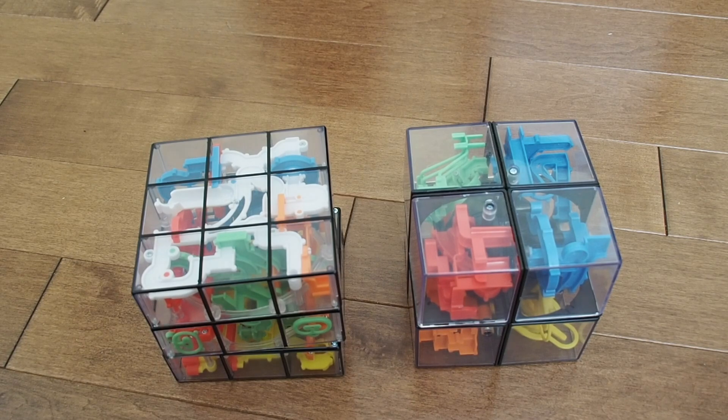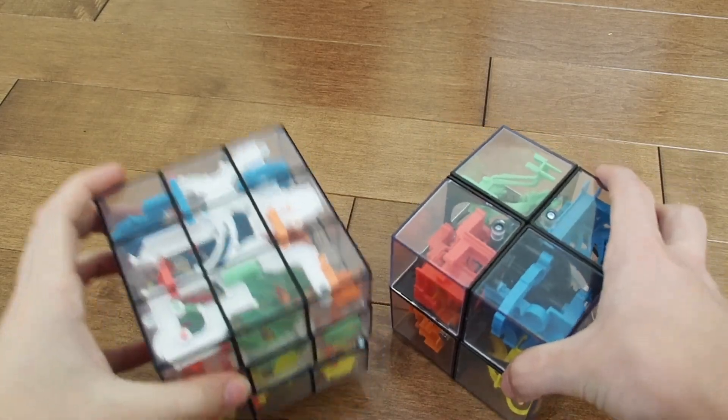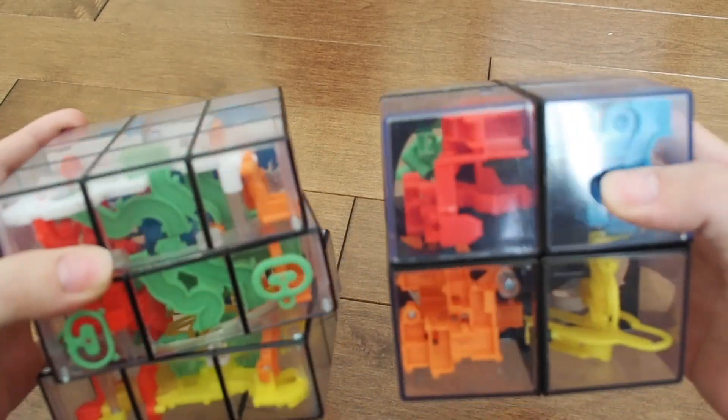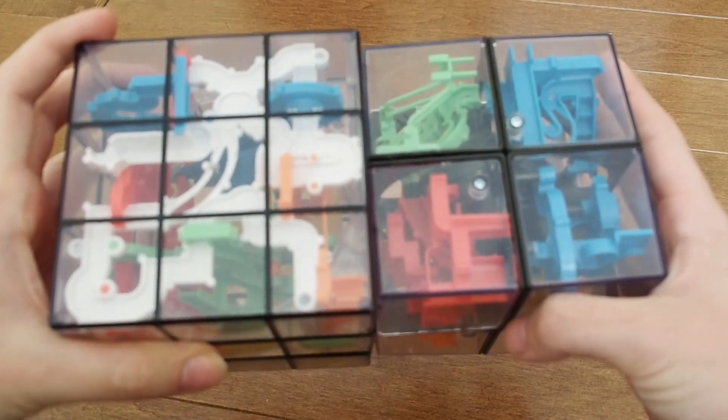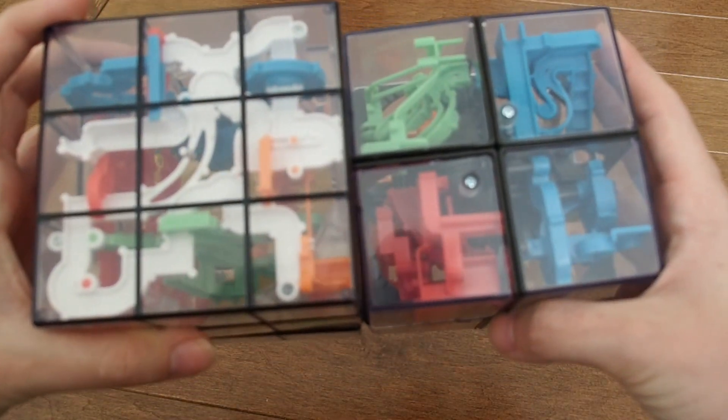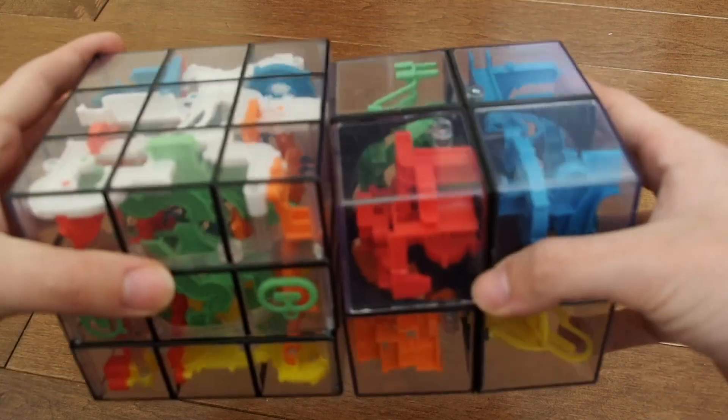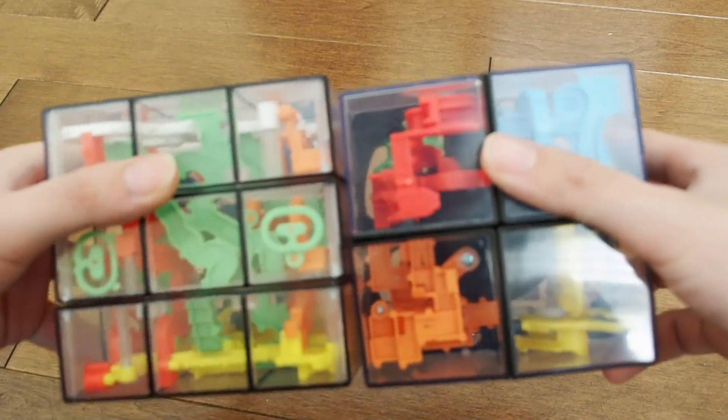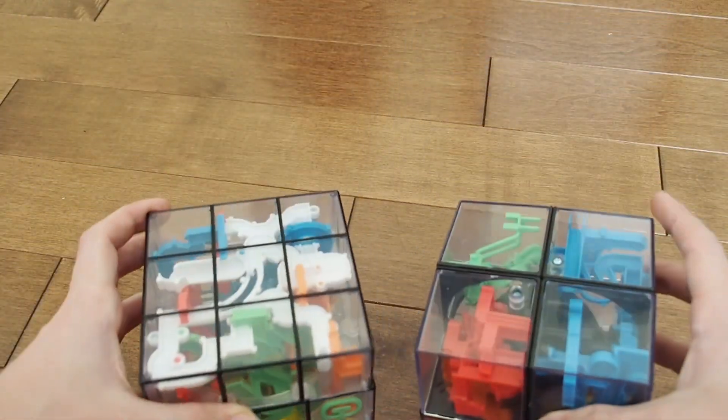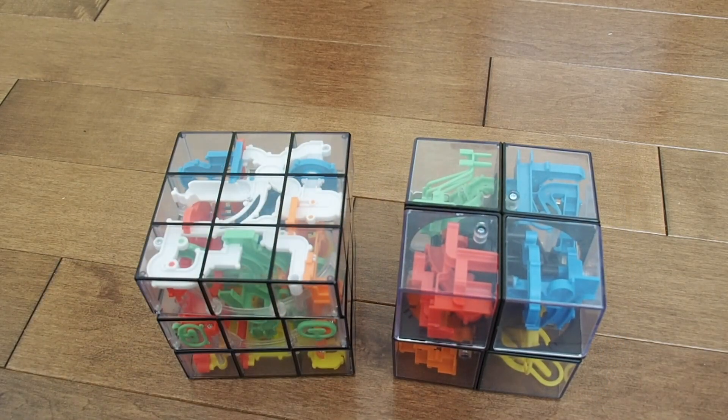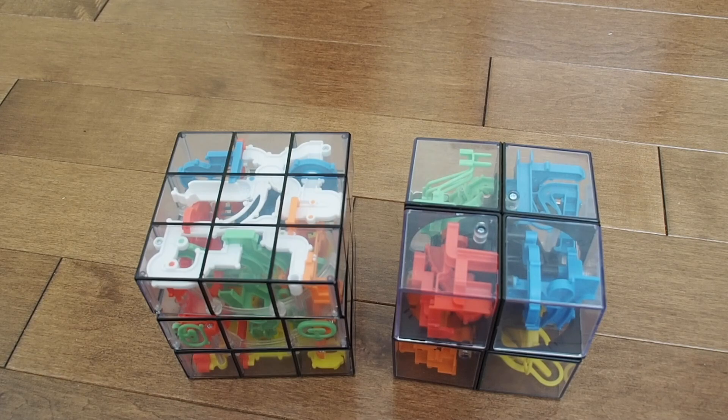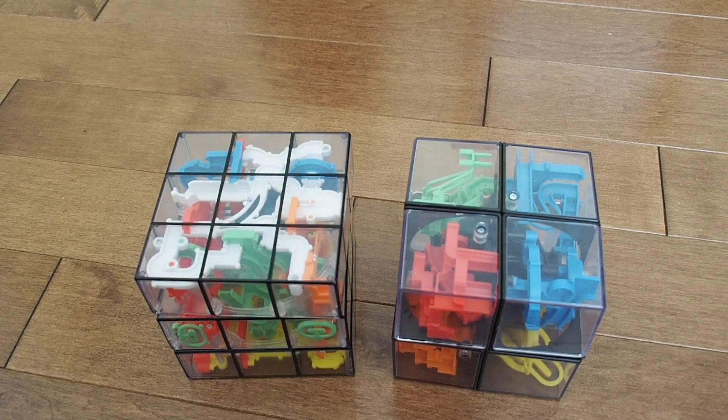The first thing you'll notice is despite this being a 3x3 and this being a 2x2, these are almost exactly the same size. I think the 3x3 is just a touch bigger but only slightly, like a very marginal difference. Basically the same size, which surprised me a little bit when I got it. I figured the 3x3 would be quite a bit larger.